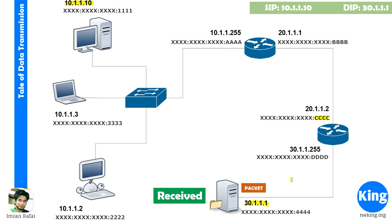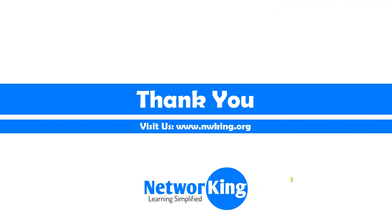The packet reaches the file server. The file server strips the layer 2 information, looks at layer 3, sees it is addressed to itself, and receives the data. It goes through layers 4, 5, 6, and 7, reconstructs the data, and gets back the original message. This is how data transmission happens over the network. These are the three critical devices you need to understand as a CCNA. If you have any questions, write to imran.rafai@nwking.org or leave comments below on YouTube. Thank you so much — keep watching and happy learning.